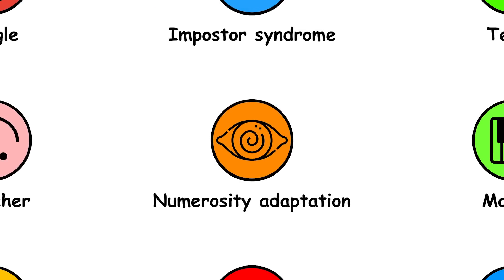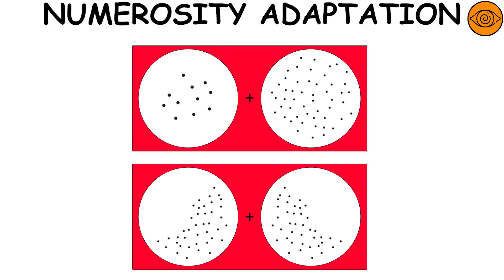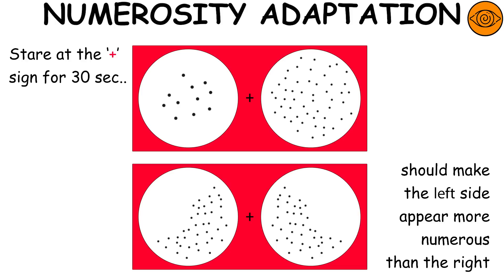Numerosity adaptation effect. It occurs when the perception of quantity changes after prolonged exposure to a certain number of elements. Staring at the plus sign for 30 seconds and then looking at the one below should make the left side of the display appear more numerous than the right, although in reality they are identical.